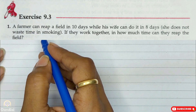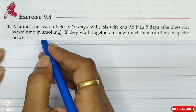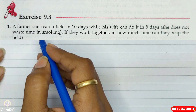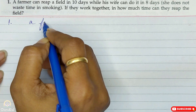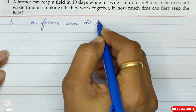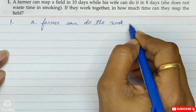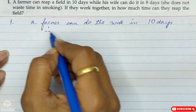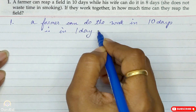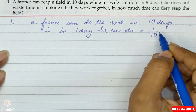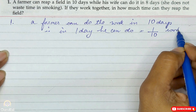Question number one: A farmer can reap a field in ten days while his wife can do so in eight days. If they work together, in how much time can they reap the field? A farmer can do the work in ten days. Therefore, in one day he can do one by ten work.